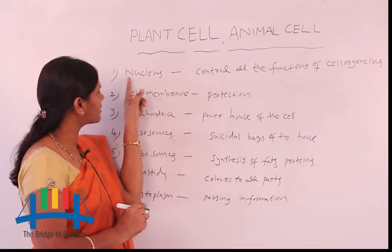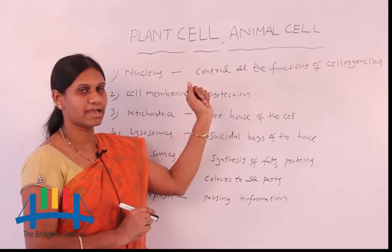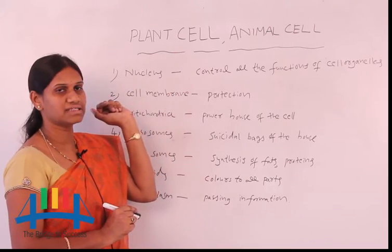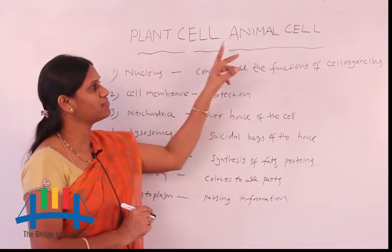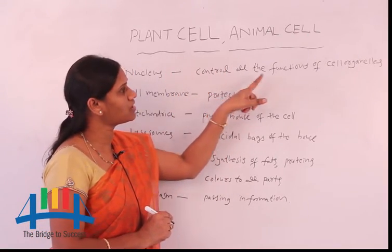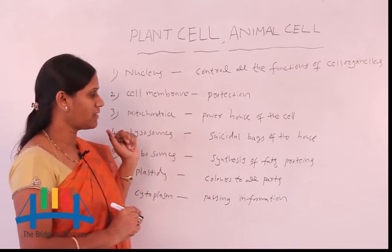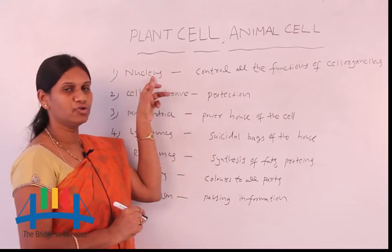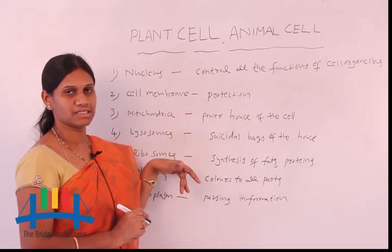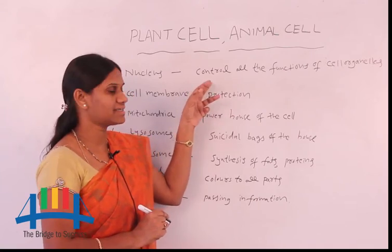The first and most important cell organelle is the nucleus. The nucleus is present in the center of both the plant cell and animal cell — more precisely, in the center of the animal cell and toward the side in the plant cell. The function is the same in both cells: it controls all the functions of the cell organelles. Because of this, the nucleus is called the remote of the cell.